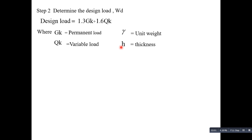The second step is to determine the design load. We use the load combination: design load equals 1.3 times the permanent load plus 1.6 times the variable load. The permanent load includes the self-weight of the structure, where γ is the unit weight of the material and h is the thickness.